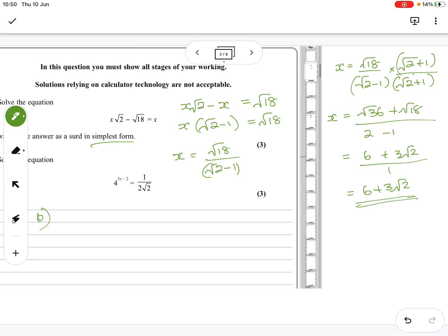Okay, for B, I think the easiest way to do it is to change everything into 2 to the power. This is going to end up as 2 to the power and 4 is 2 squared. So you've got 2 squared to the power 3x minus 2 equals... Now, this is it. What is that?